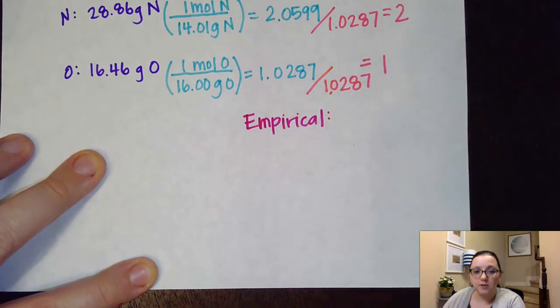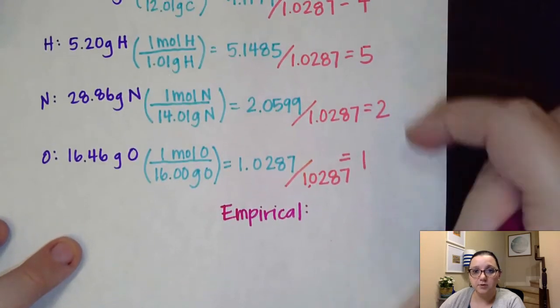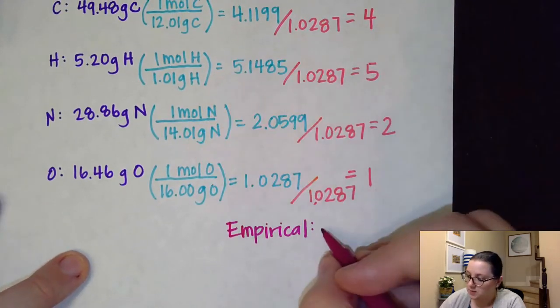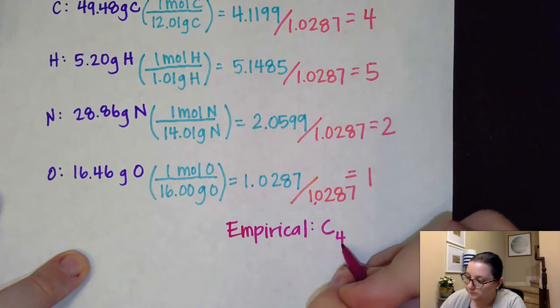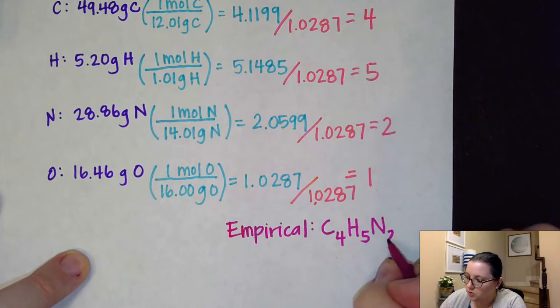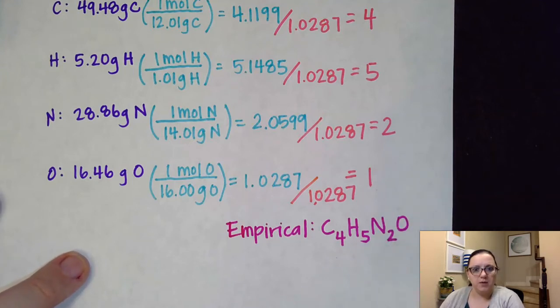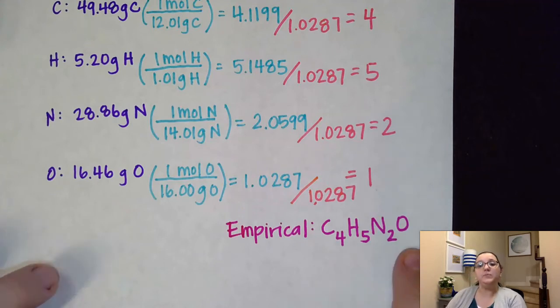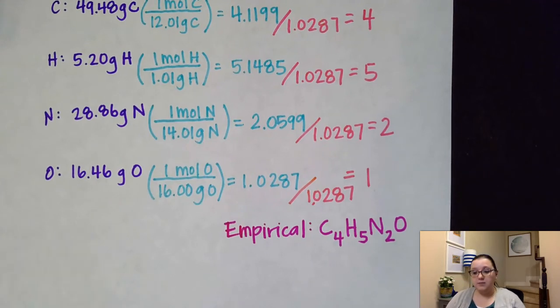So what that means is that I have now solved the empirical formula. The empirical formula will have each of these numbers as the subscripts for those respective elements. So carbon will be 4, hydrogen will be 5, nitrogen will be 2, and oxygen will be 1, which we can just leave blank because that would be understood to be 1. So this is my simplest ratio of elements in caffeine.